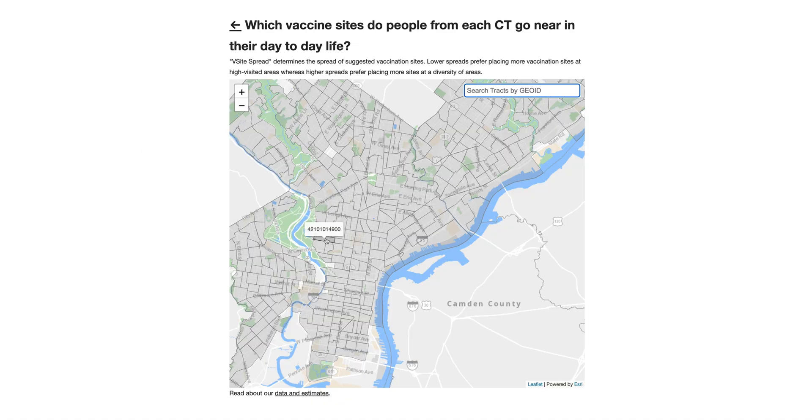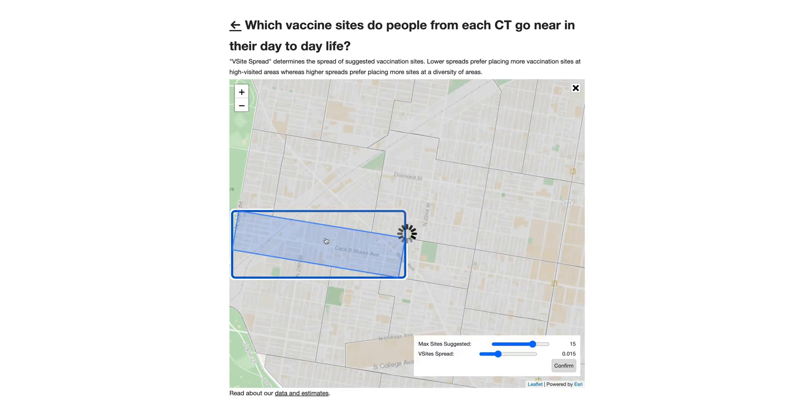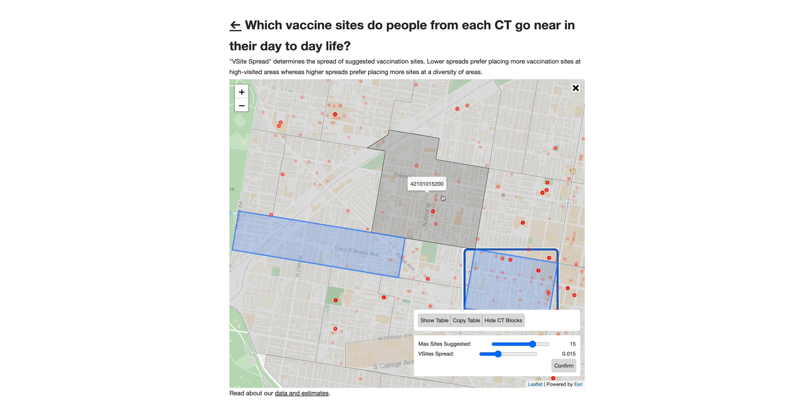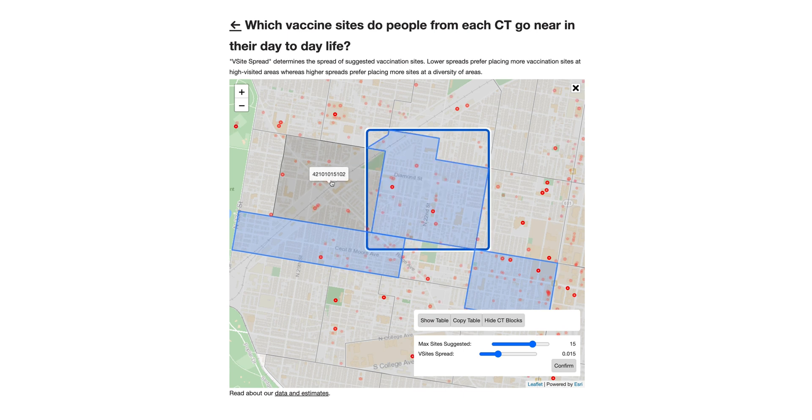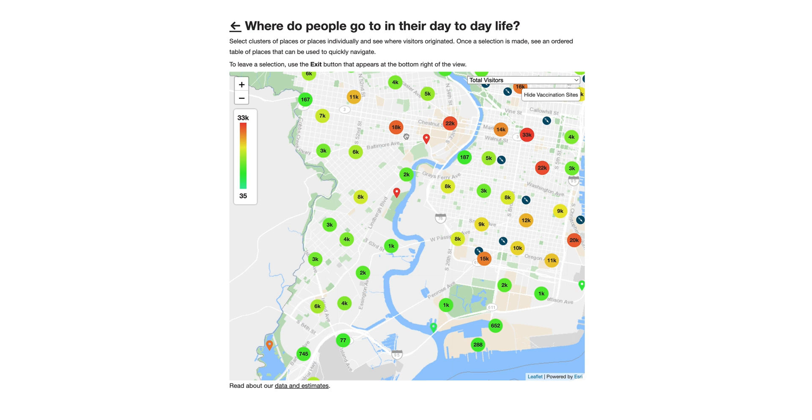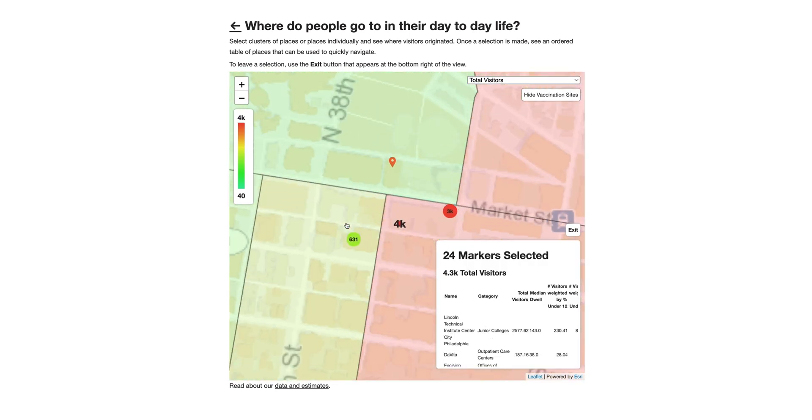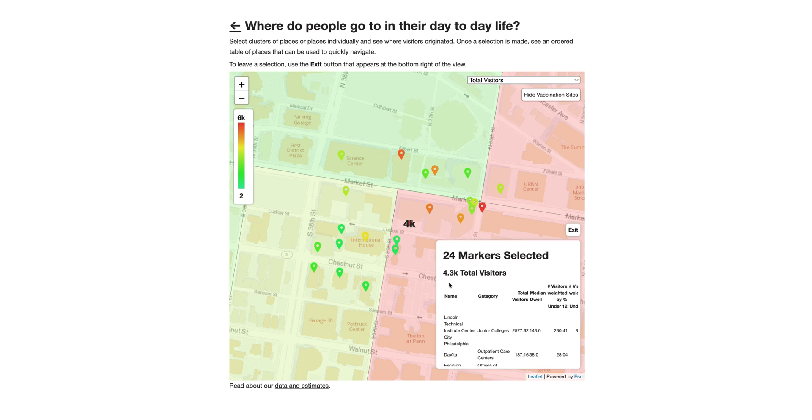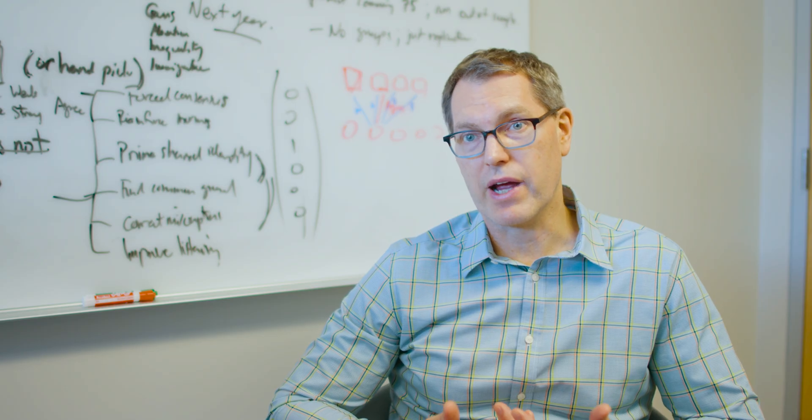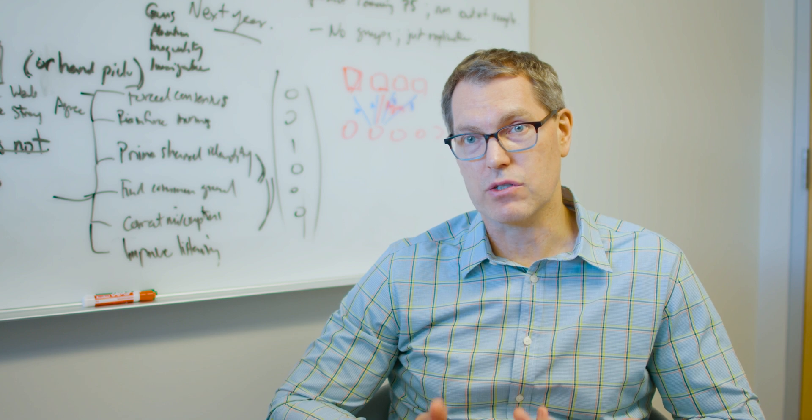So we could use a computational social science approach to think about pandemics by leveraging the fact that certain companies collect data on GPS locations of millions and millions of cell phones across the country and around the world. And we can use that data to figure out when and where people are interacting in ways that could lead to the spread of disease.